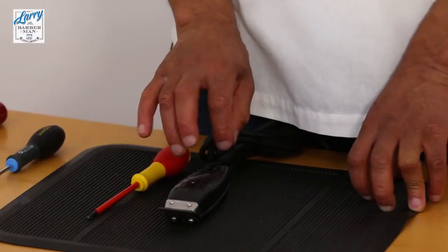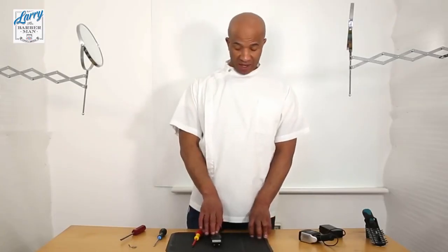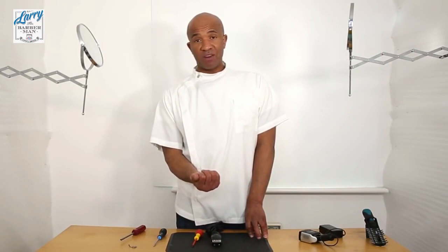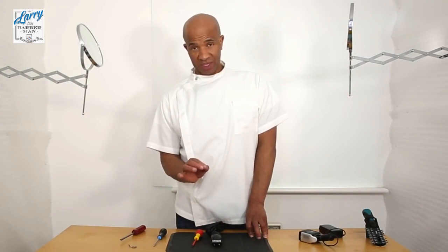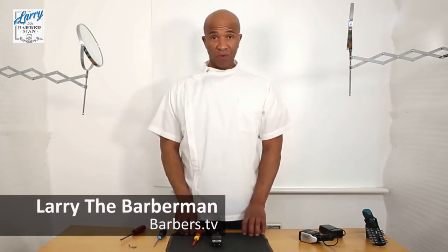That is how you replace the tension spring on a T-Outliner or a GTX. And like I said, once you've replaced the spring it's just a trial and error process making that half moon either bigger or smaller until it hits exactly where you want it to hit. So that's another demonstration by Larry the Barberman. Hope you found it helpful. If you did please subscribe to my YouTube channel. Thank you.